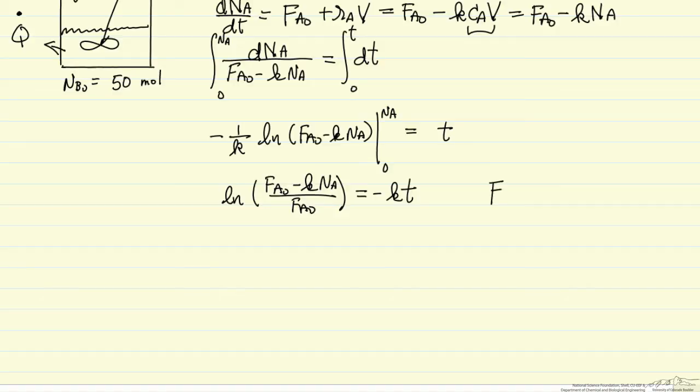And that gives me, and this is 1 minus K in A over FA0, and then I can rearrange this to solve for K in A.